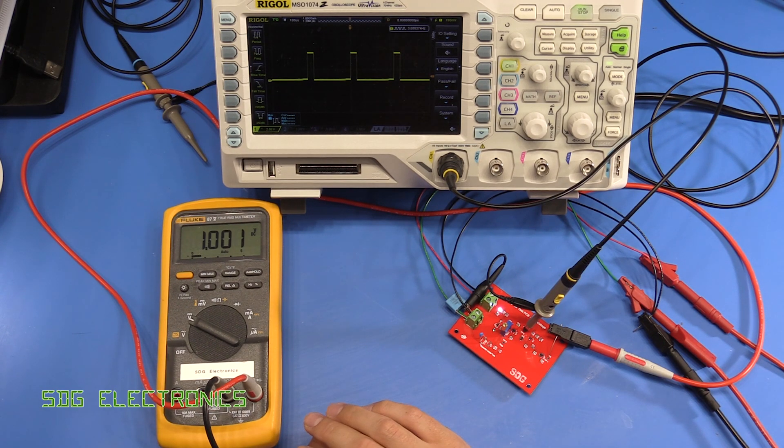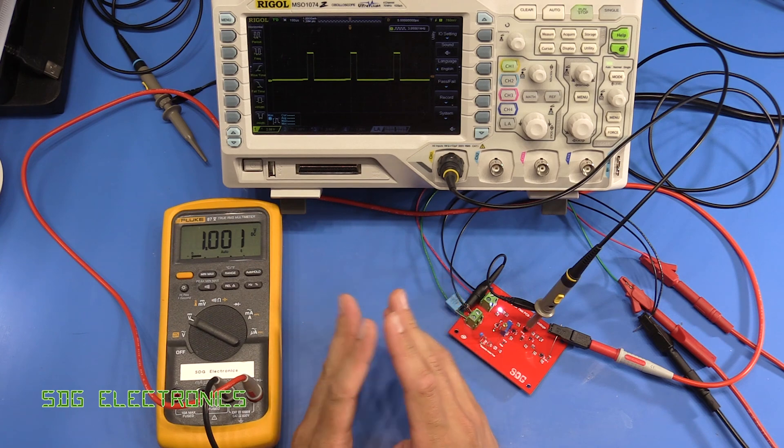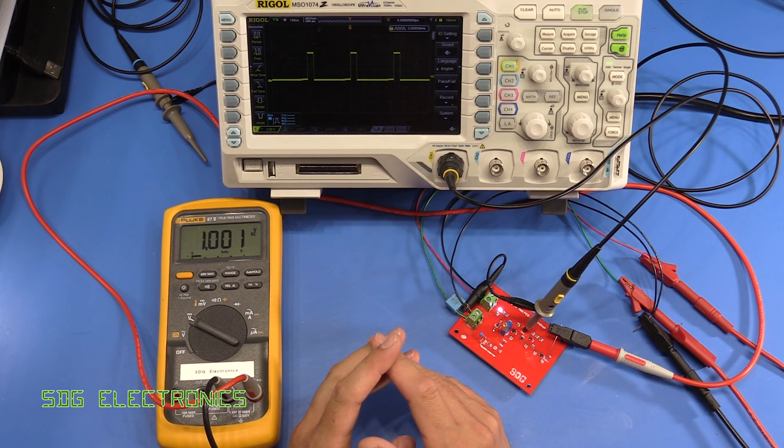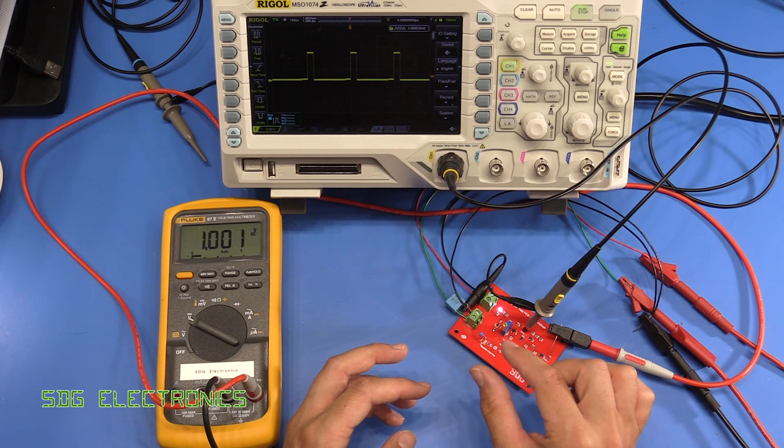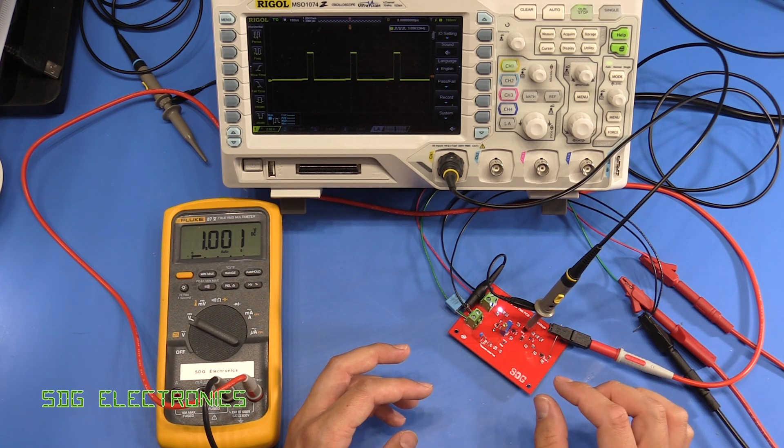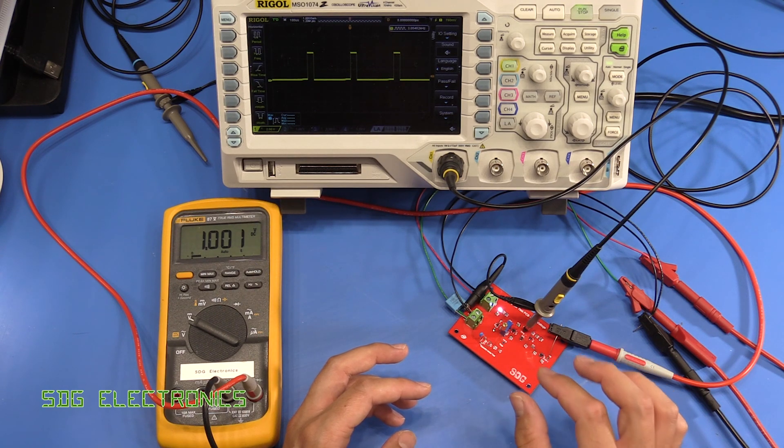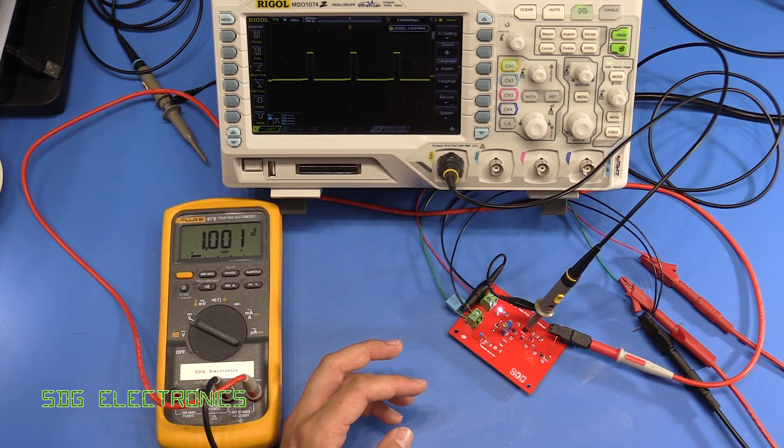This might be common knowledge to some of you, and some may have never come across this phenomenon. But basically what happens is once you've applied a DC voltage to a class 2 ceramic capacitor, the capacitance value will be less than what was originally specified in the datasheet.